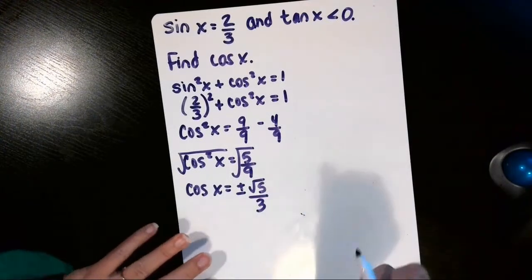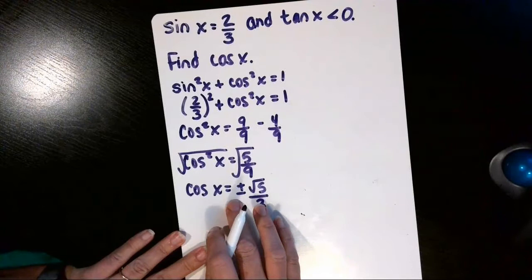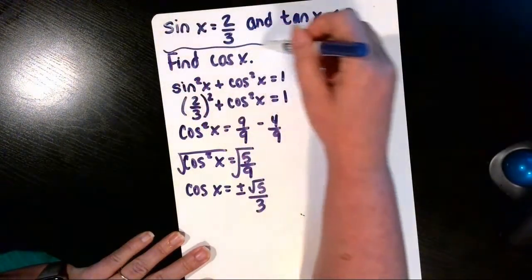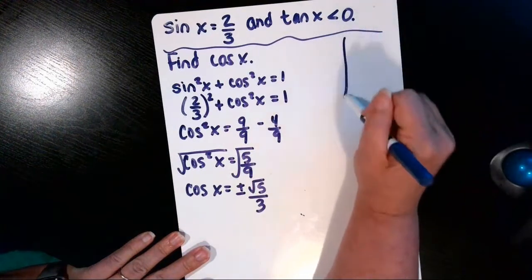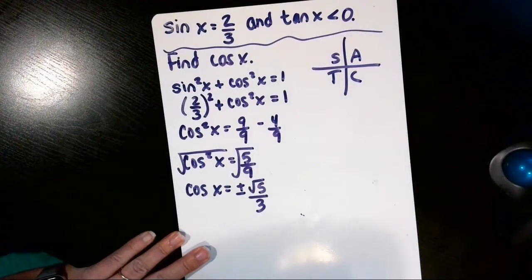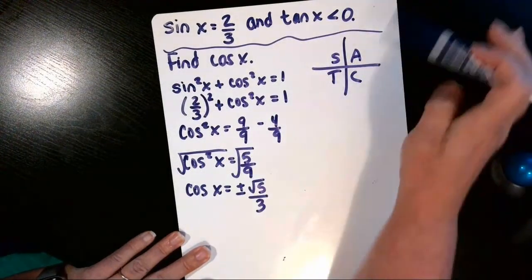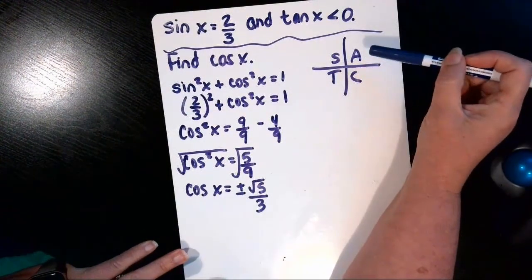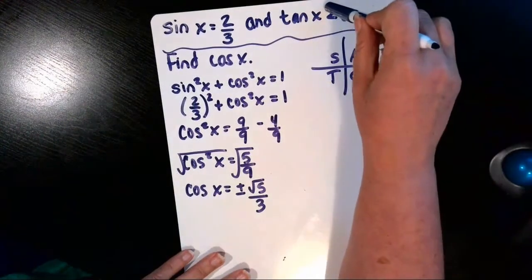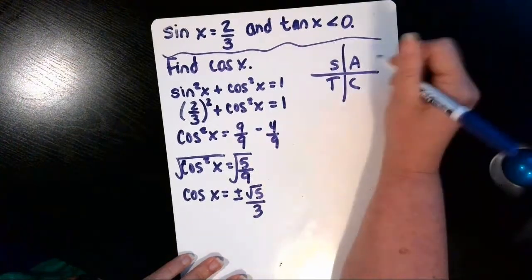And to decide whether to keep the positive or the negative answer, we want to come back up here to our given information and remember our acronym, All Students Take Calculus, to remember the signs in the quadrants. So the A stands for all—all six trig functions are positive in quadrant one. That won't work because it tells us in the given that the tangent is negative.